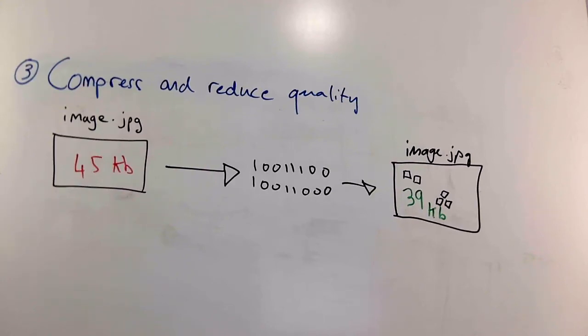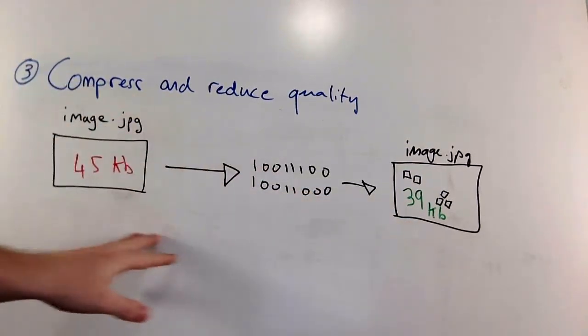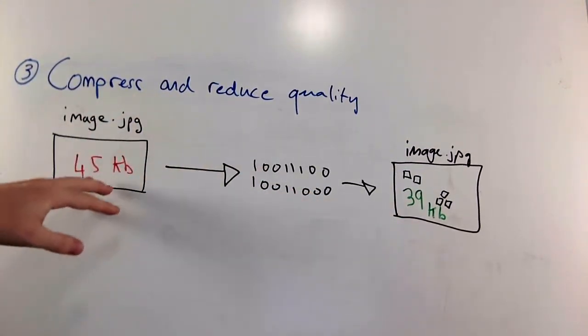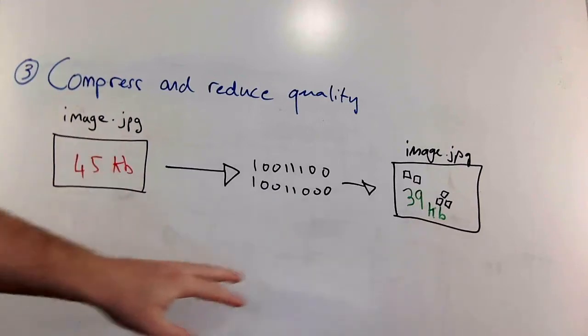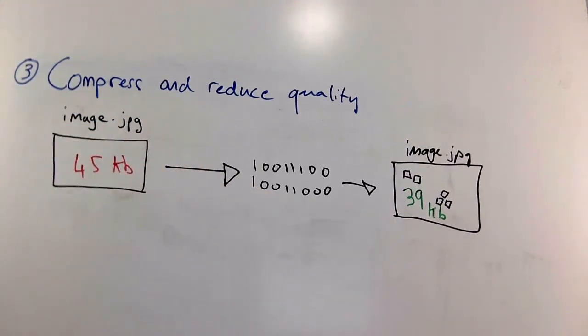But what's going on there? What it's doing is it's going to lower the quality of your image. Here's a good example. Let's say you have image.jpg, and these two images are the same, except the quality is different. You could slim down from 45 kilobytes to 39 kilobytes just by toggling that option. The thing is, you're going to start seeing more pixels so that your image is going to be more pixelated.